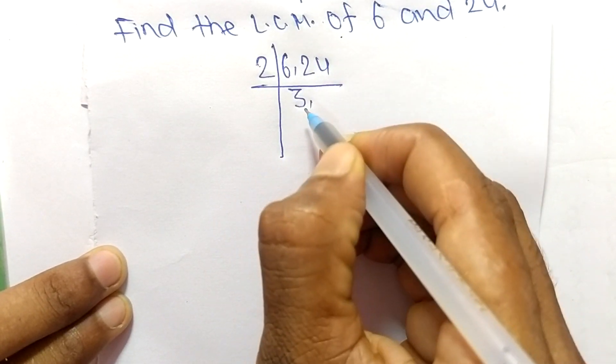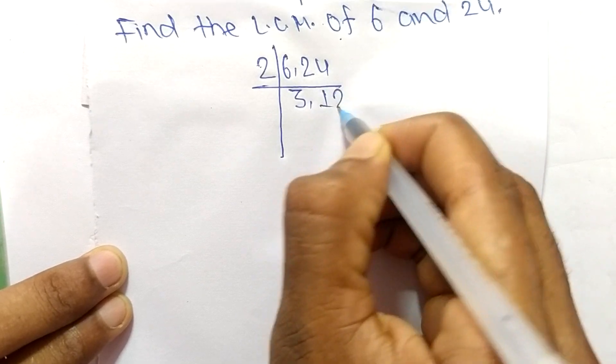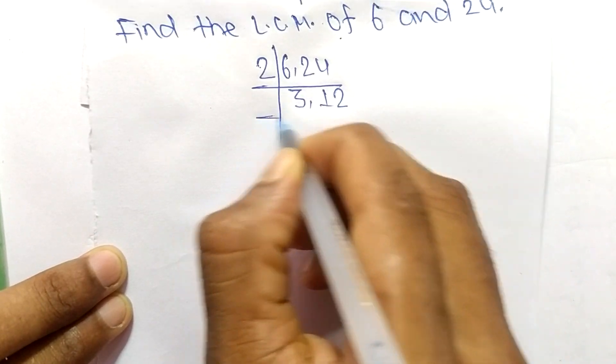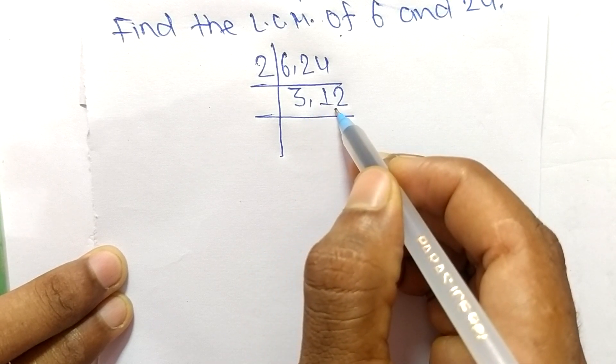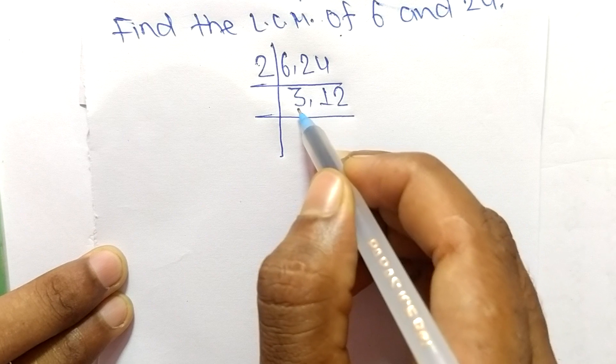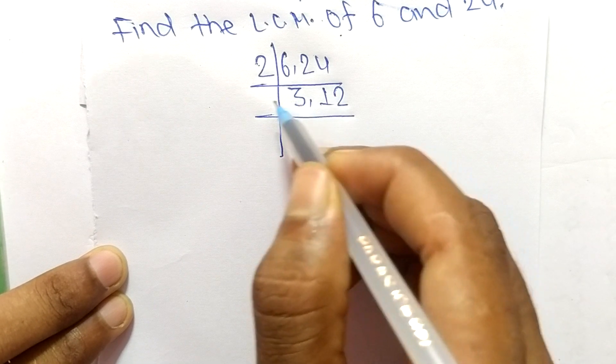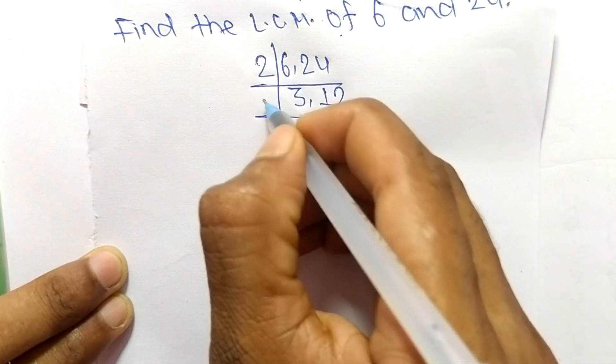2 times 3 means 6, and 2 times 12 means 24. Now again, taking 2, we find 2 can divide 12 but it can't divide 3. So we take the number greater than 2, which is 3.